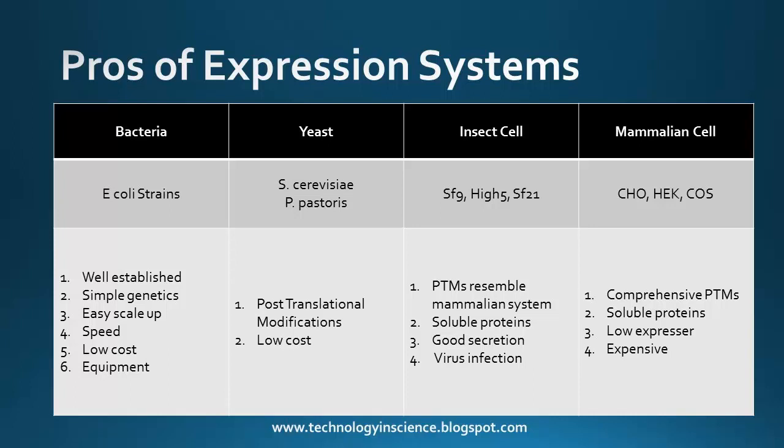The most widely used bacterial system for protein production is E. coli. These are well established, have simple genetics, are easy to scale up, and can be produced really fast. The protein production can be done very quickly, the cost of production is very low, and the equipment requirement is also very low — no need for complex equipment systems.